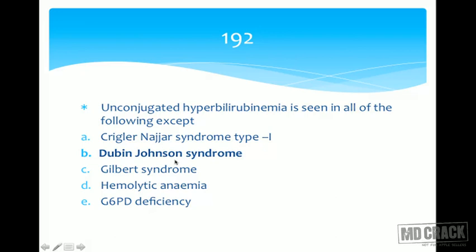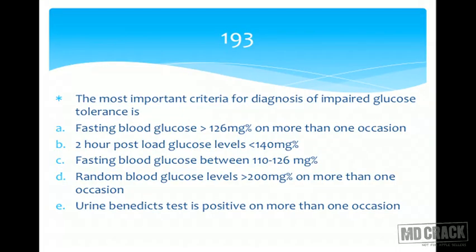Next question: the most important criterion for diagnosis of impaired glucose tolerance. The answer is fasting blood glucose between 110 to 126 mg%. Below 110 is normal; above 126 is diabetes mellitus. Between 110 and 126 we call it impaired. However, this alone is actually impaired fasting glycemia; if only this criterion is present that is what we call it.